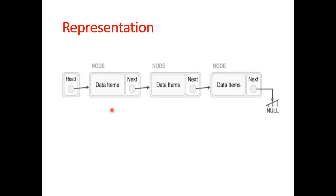In this diagram, you can see three nodes are available: node one, node two, and node three. Each node is internally divided into two parts. The first part stores the data value or item, and the second part is a pointer to the next node, storing the address of another node. The first node's next pointer stores the address of the second node.